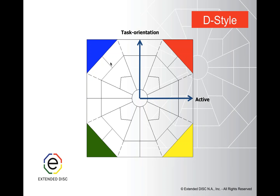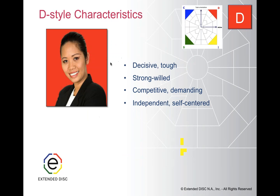They really aren't as focused on what is going on between A and B, but how do I get from A to B so I can go from B to C, C to D, etc. Hallie, do you mind taking us through the characteristics overview of the D style? D's are in the top right-hand quadrant of the DISC diamond, right between task and active. Some attributes to describe them would include decisive or tough, very strong-willed, competitive and demanding, independent and self-centered.